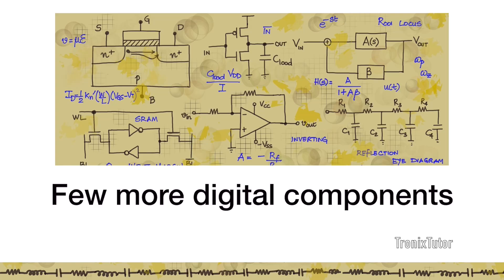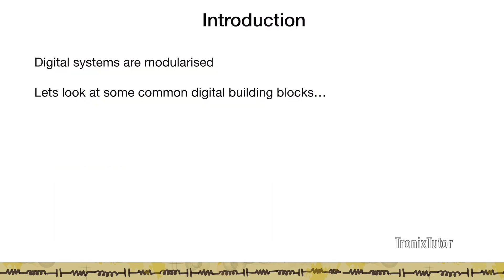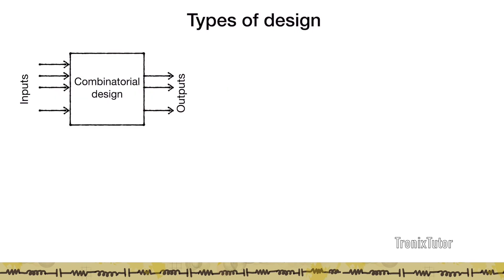Hello, in this video, let's look at a few more digital components that we might use in design. As discussed in the previous video, digital systems are modularized. Let's look at some of the common digital building blocks of a system. Before we begin, let's quickly talk about two kinds of design we generally do in digital systems.